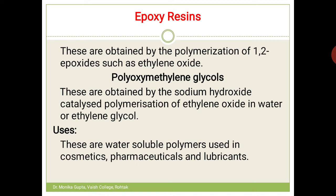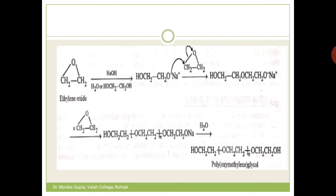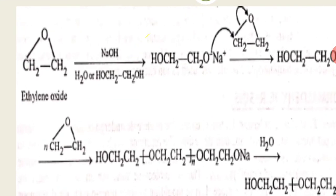Polyoxyethylene glycol is obtained by sodium hydroxide-catalyzed polymerization of ethylene oxide in water with glycol as solvent. These polymers are used in cosmetics, pharmaceuticals, and lubricants.